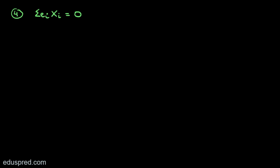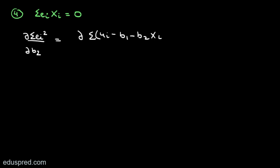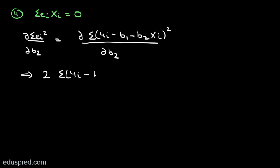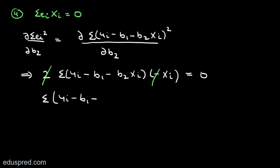Let's see why this happens. To find the formula to calculate B2, we partially differentiated summation Eᵢ squared with respect to B2. In place of summation Eᵢ squared, we write summation (Yᵢ minus B1 minus B2Xᵢ) whole squared, and partially differentiate with respect to B2. This gives 2 times summation (Yᵢ minus B1 minus B2Xᵢ) multiplied by minus Xᵢ. Setting this first-order condition equal to 0, the 2 and minus sign cancel, leaving summation (Yᵢ minus B1 minus B2Xᵢ) multiplied by Xᵢ equal to 0.